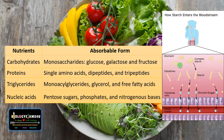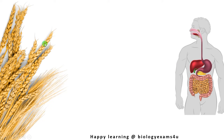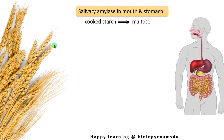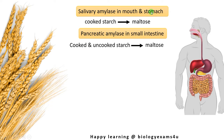Now let us move into the detail of digestion and absorption of carbohydrates. The carbohydrates we eat are first acted upon by salivary amylase in the mouth. Salivary amylase converts cooked starch to maltose, which is a disaccharide made up of two glucose units. Salivary amylase is also present in the stomach, where it also converts starch into maltose. Then pancreatic amylase in the small intestine converts cooked and uncooked starch to maltose.